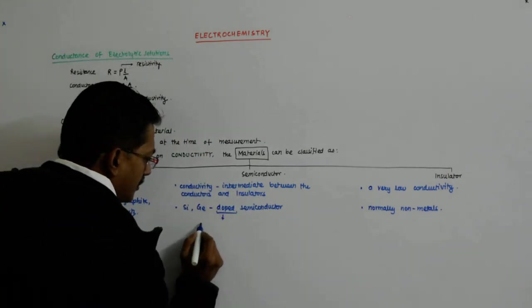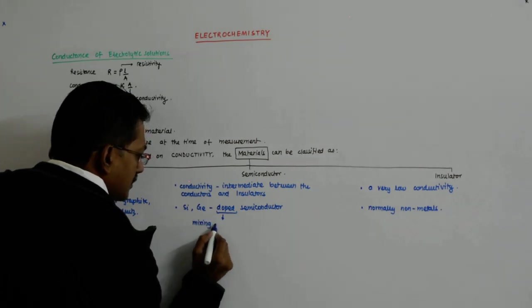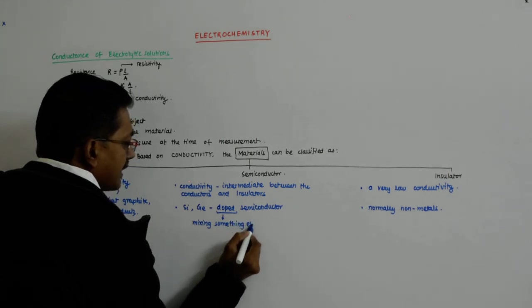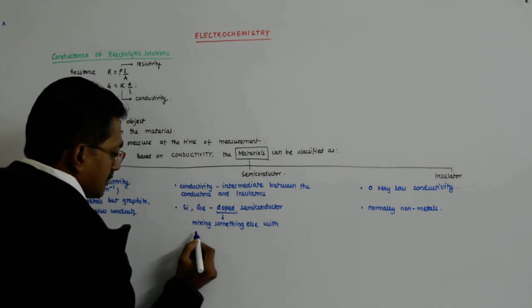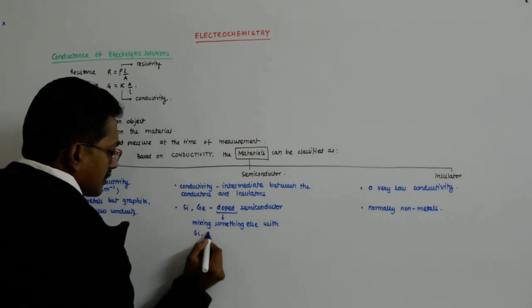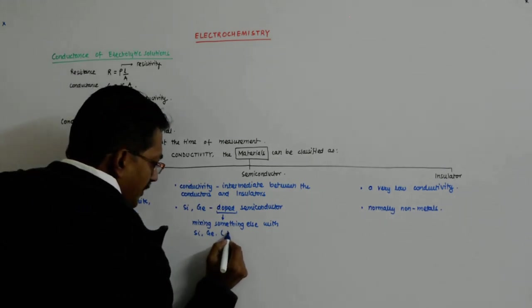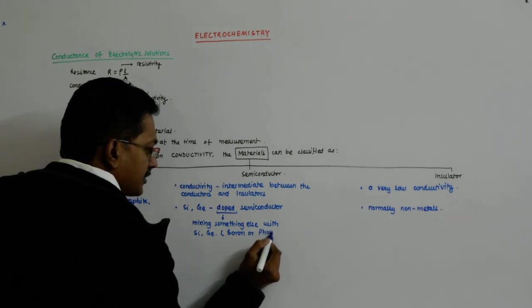Doping is mixing something else into the pure silicon or germanium. Mixing something else with silicon germanium, boron or phosphorous.